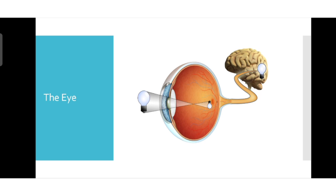Here we can see that the front part of the eye is curved. It also bends the light and creates a smaller and upside down image on the retina. The electrical impulse from the eye travels through the optic nerve and reaches the brain. The brain eventually turns the image right way up.